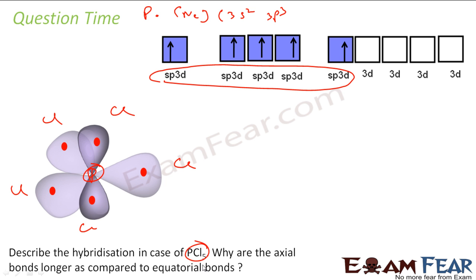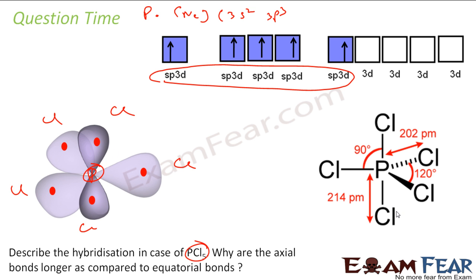Now the question is why are axial bonds longer as compared to equatorial bonds? So if you see the axial bonds, these are my axial bonds actually. They suffer more repulsion and thus they are longer. See this, these suffer more repulsion, so they are longer. These are my equatorial, these three are my equatorial bonds.